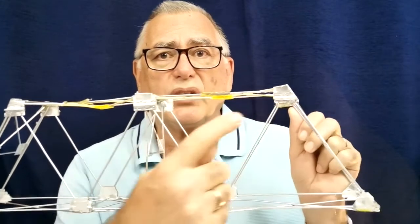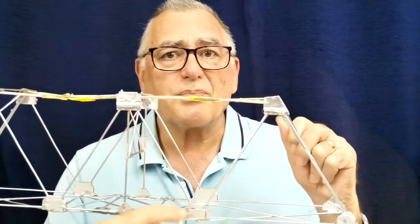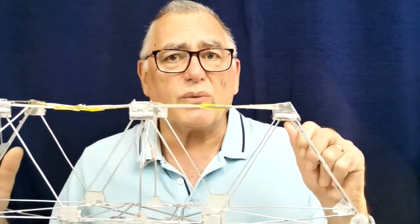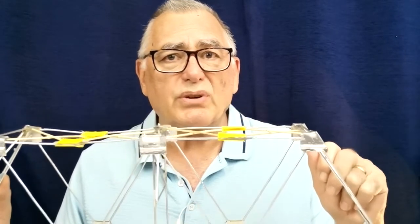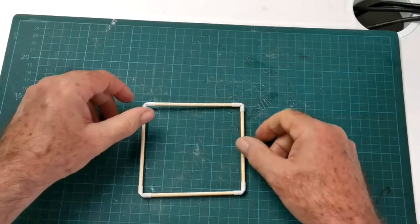So what is a truss bridge? Simply, it's a bridge that is made up of connected pieces of material, mostly in the shape of triangles. Let's look at why triangles are so important in truss bridge construction.